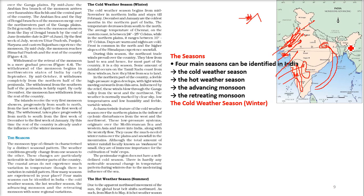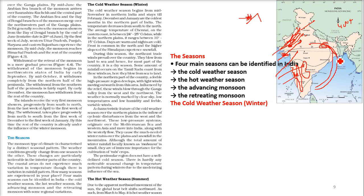This region gets a lot of rain because we have the Khasi, Jaintia, and Garo mountains. In fact, 400-plus centimeters of rain is recorded here per year, specifically during the monsoon season.